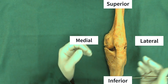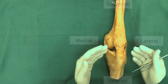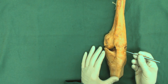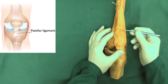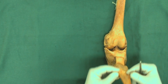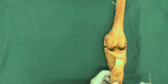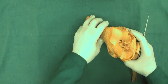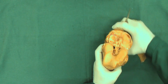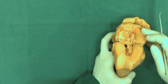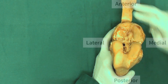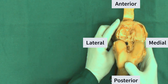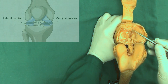Now let's walk through the menisci inside the knee joint. This is the anterior view of the knee joint — here is the patella, the patellar ligament, and the quadriceps tendon. If we reflect the patella we can look inside the joint. Turning to show the menisci inside the joint: the anterior side, posterior side, lateral side, and medial side for orientation.